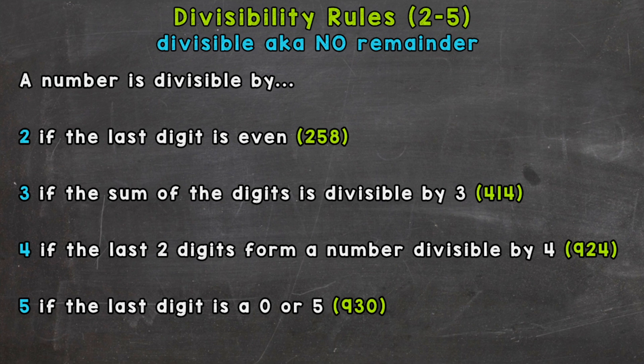So for example, 8 is divisible by 4. I can do 8 divided by 4, and that equals 2, and we don't have a remainder. Another example: 10 is divisible by 5. I can do 10 divided by 5, and we would get 2 without a remainder. We're going to go through some rules here for 2, 3, 4, and 5, and I'll follow this video up with rules for 6, 7, 8, 9, and 10.